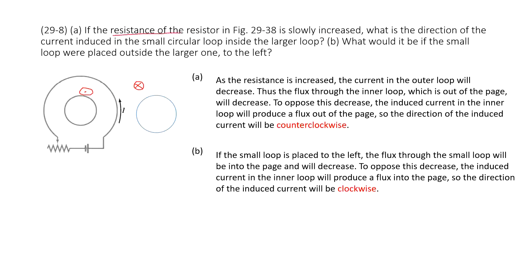The resistance of the resistor is slowly increased. What does that mean? That means the current is slowly decreased, because the current is equal to V over R — Ohm's law. The decreasing current makes the induced magnetic field decrease.